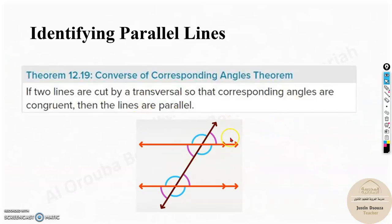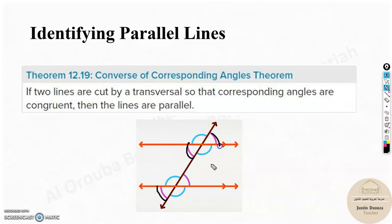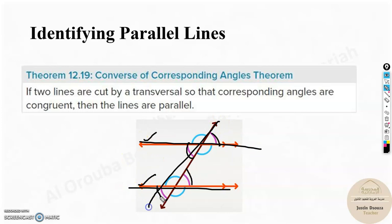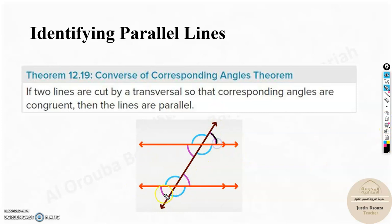Here we have converse theorems. You can see these are corresponding angles. We have learned about this in the previous lesson. If two lines are cut by a transversal so that corresponding angles are congruent — if this angle is congruent to this one — then these lines are parallel. This is the transversal which is cutting. In the previous lesson we had learned: if two lines are parallel and cut by a transversal, then the corresponding angles are congruent.